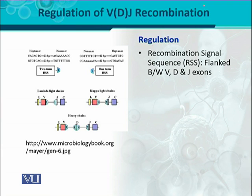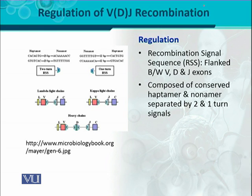Between the V, D, or J exons, these regions are present which are called as Recombination Signal Sequences, and these are very important regarding determining the diversity or recombination or combination of V, D, and J regions. These regions are composed of conserved heptamers and nonamers separated by two-turn and one-turn signals.